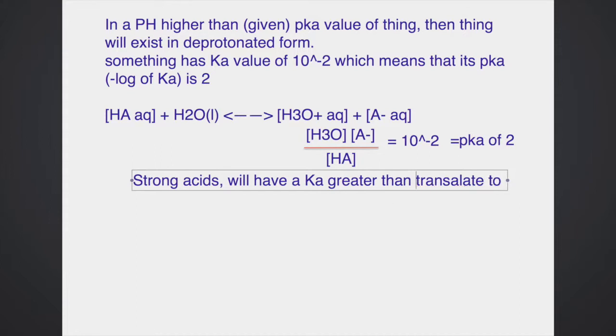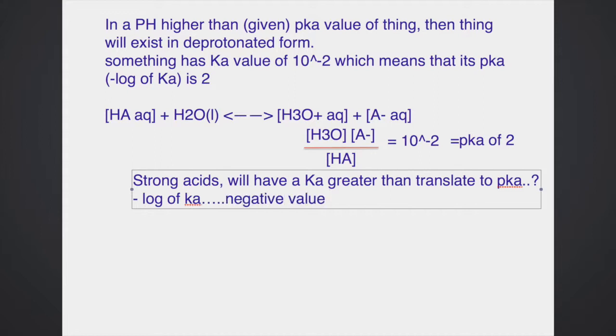Strong acids will have a Ka greater than 1, and what does that translate to pKa? That would be negative log of Ka, which will then be a negative value. So if in strong acids the Ka is greater than 1, then therefore the pKa is a negative value. But for weak acids, however, their Ka values is 1 or less, or 1 to the 10 to negative 14, really, and their pKa values would be 0 to 14. Very weak acids have a Ka value smaller than 10 to the negative 14, therefore their pKa is greater than 14 here.